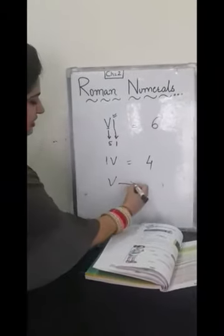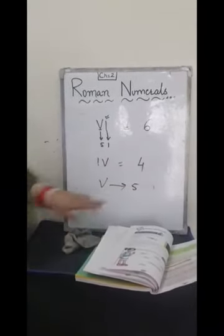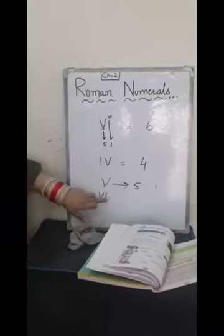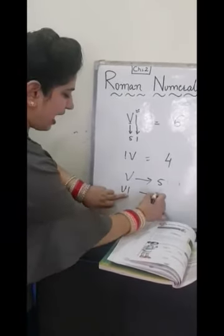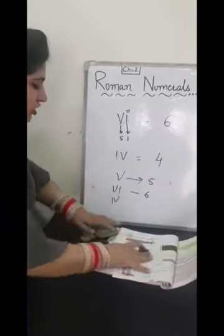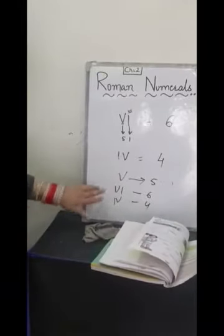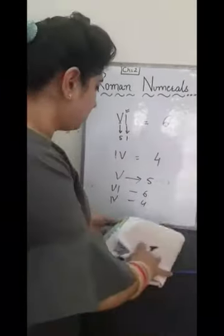If V stands for 5, if I am writing smaller right hand side, means add. If I am writing smaller left hand side, means subtract. Clear? Third and fourth rule I have explained you.